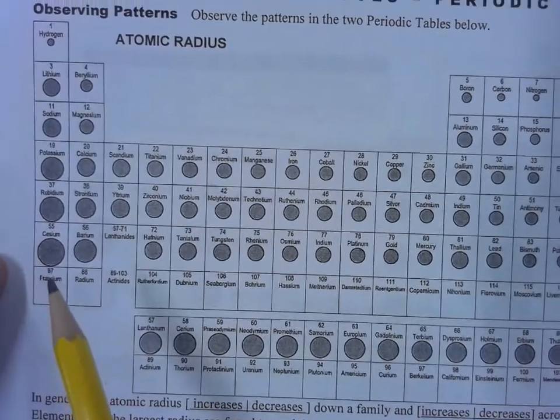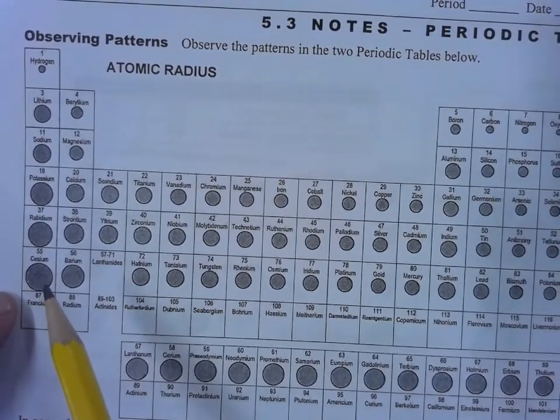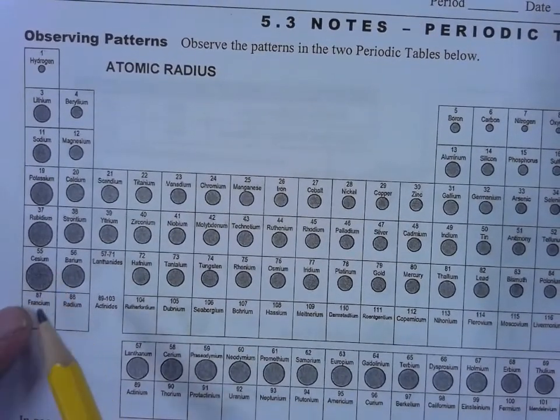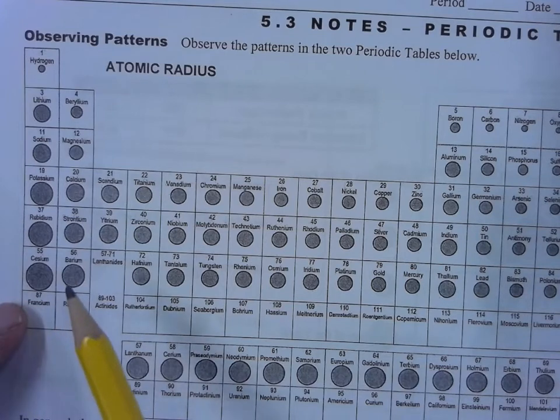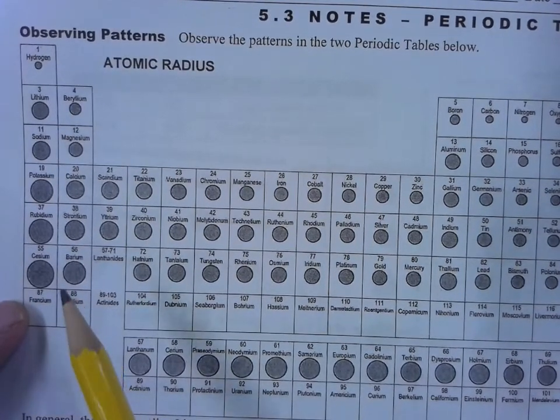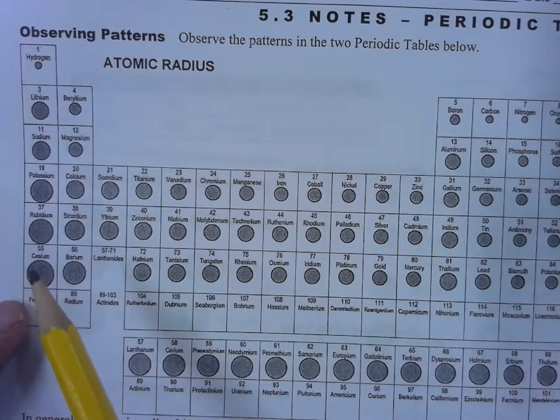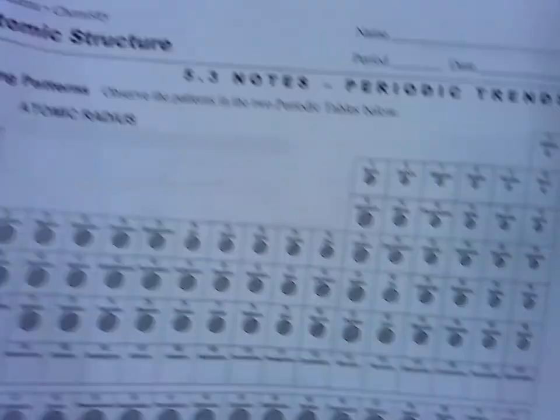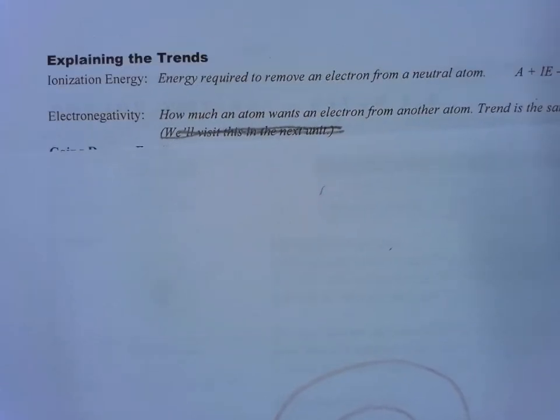On the opposite end of the spectrum is cesium that's got an electron very far away from the nucleus and it'll give it away like nobody's business. That's got a very low ionization energy. It'll give that electron away freely.